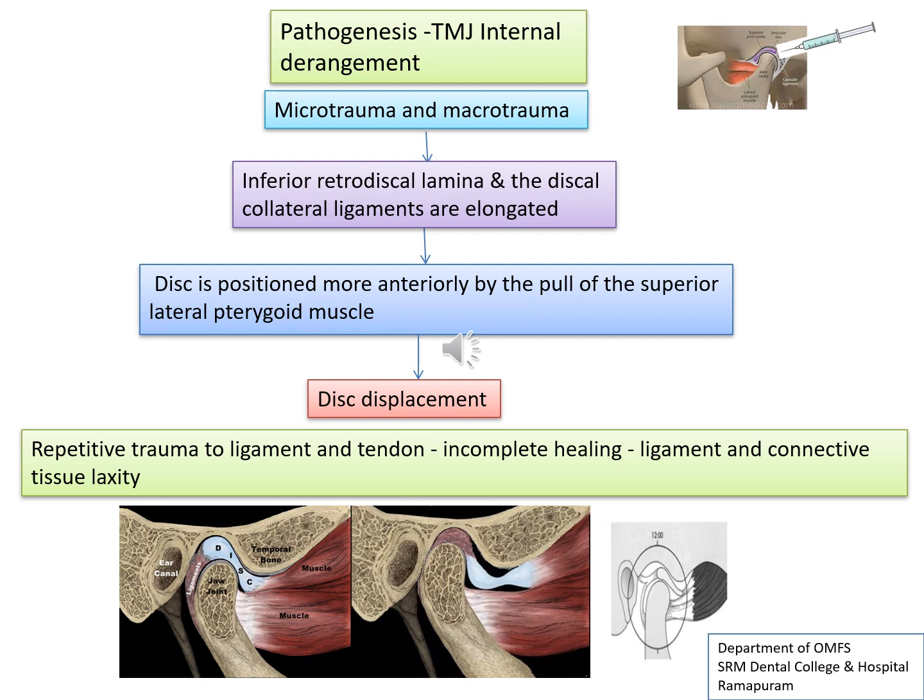Repetitive trauma to the ligament and tendon results in incomplete healing of the tissue because of its poor blood supply. Over time, this results in ligament and connective tissue laxity.